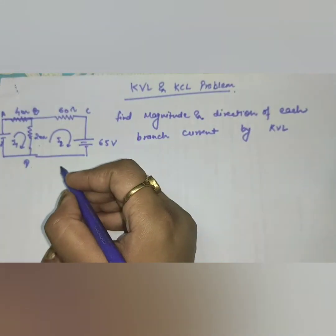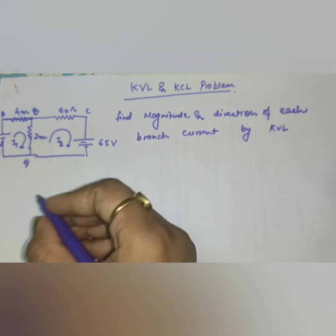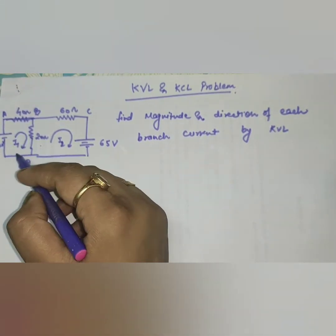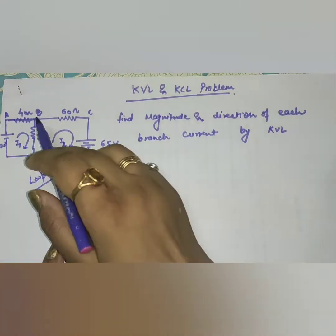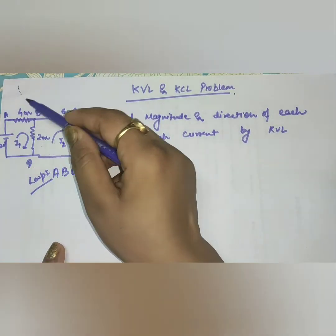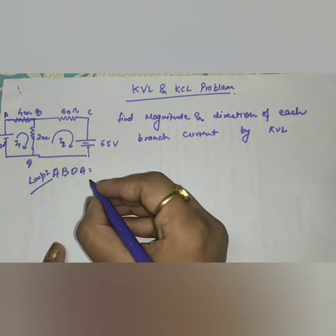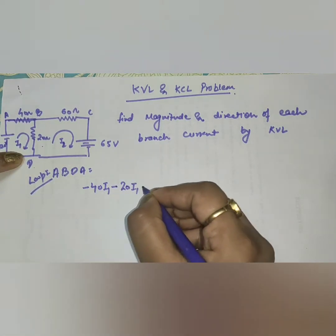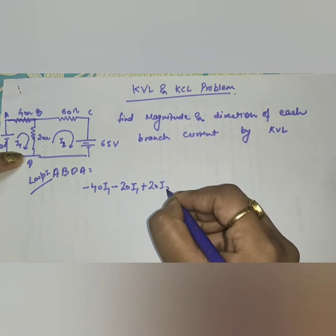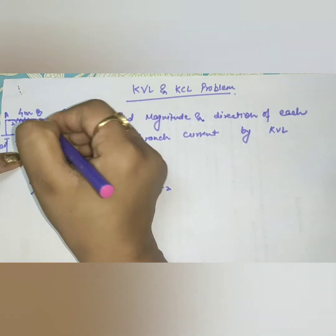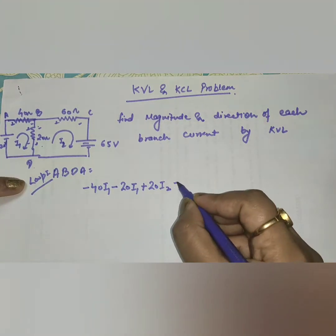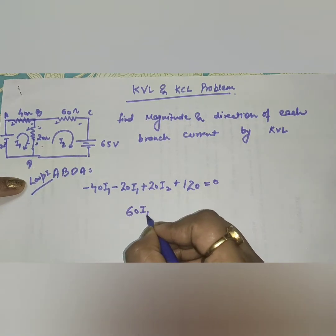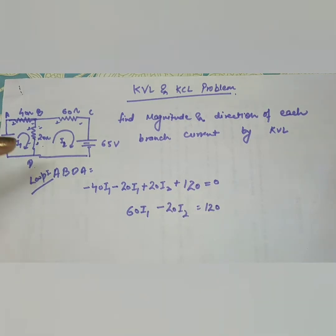Now, first of all by KVL, we will set up our meshes. Let's suppose the currents are I1 and I2. For mesh 1, the loop is A-B-D-A. In mesh 1, the KVL equation is: minus 40·I1 minus 20·I1 plus 20·I2 minus I2 plus 120 equals 0. Solving this gives us: 60·I1 minus 20·I2 equals 120. That is our first equation.